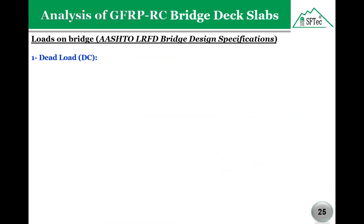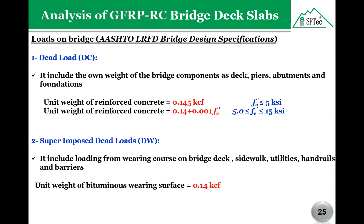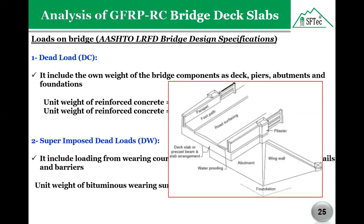The first type of loads is dead loads or DC, which represents the own weight of decks, beams, abutments, and foundations. The second type is superimposed dead loads or DW, representing loads from the wearing surface, sidewalks, barriers, and handrails on the bridge.